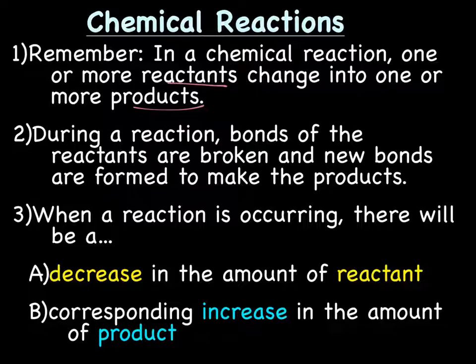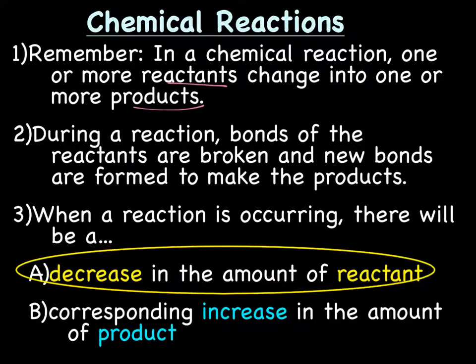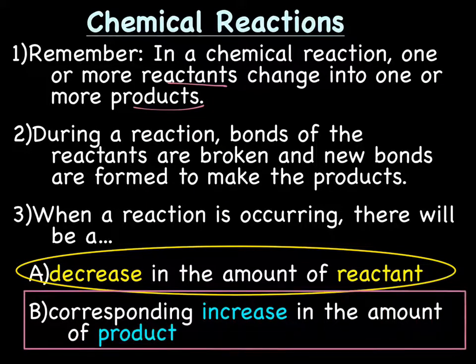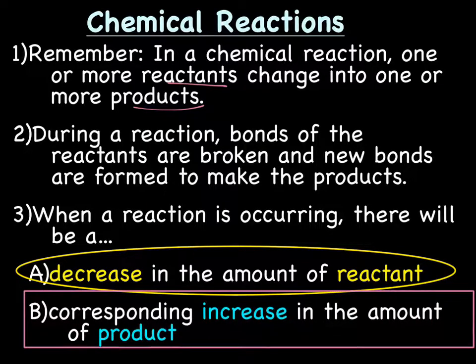So when a reaction is occurring, you're going to end up with a decrease in the amount of reactant. As the bonds are being broken, you have less and less reactant, and as new bonds are formed, you have a corresponding increase in the amount of product.